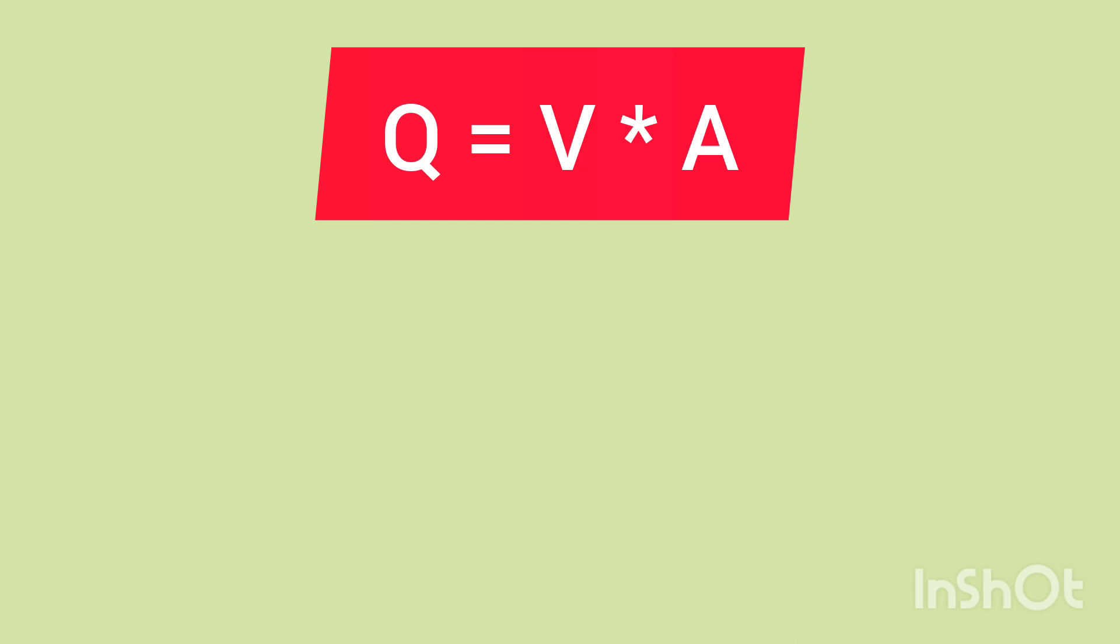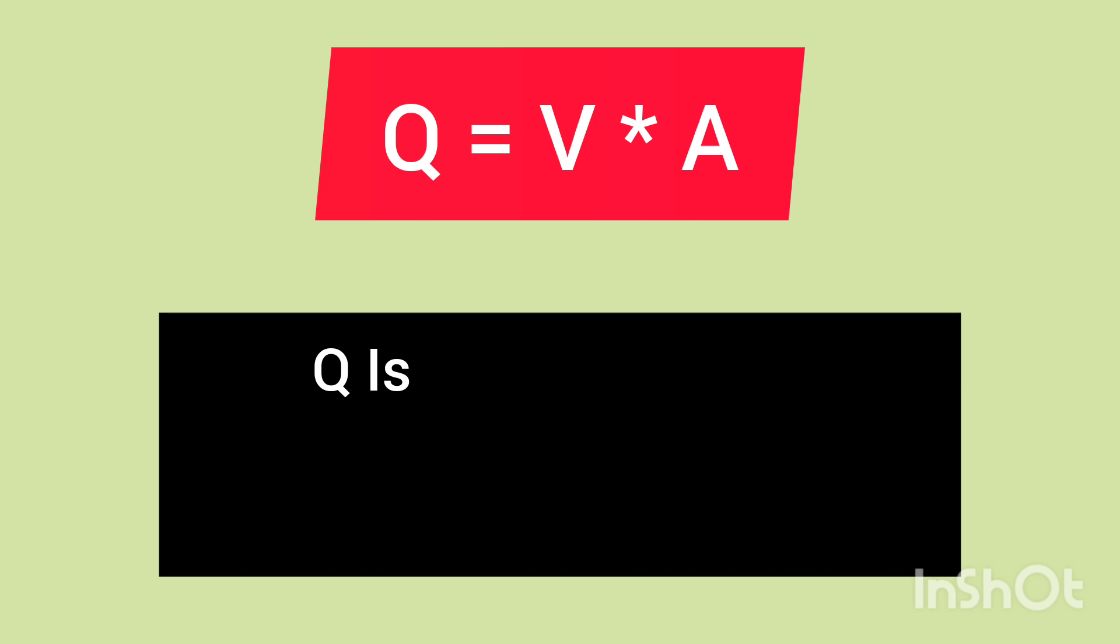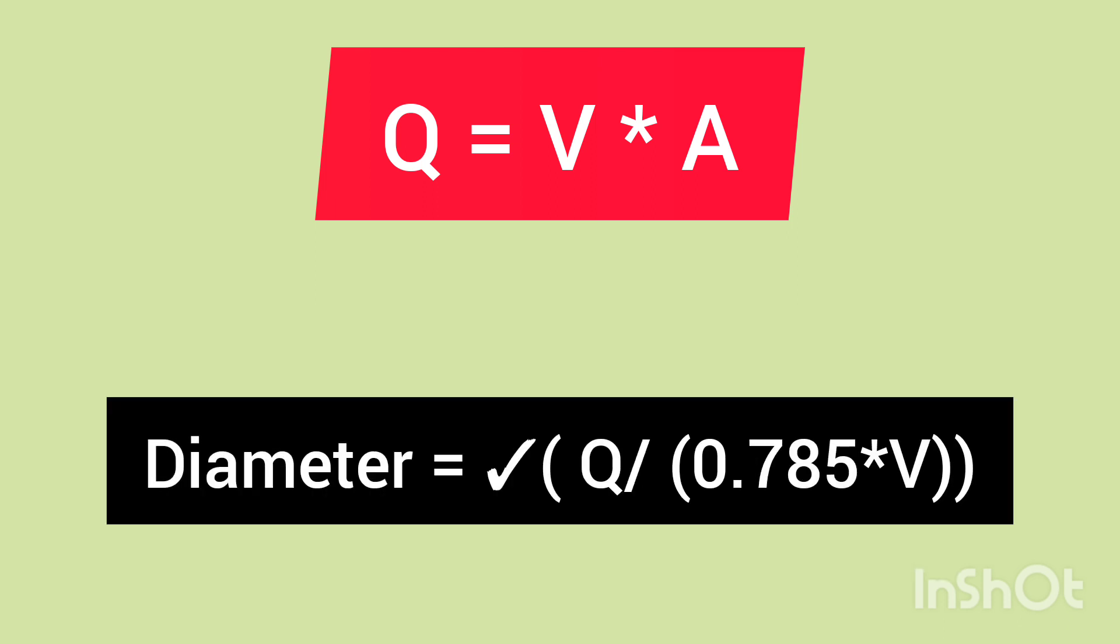So let's start with one example, but before starting with the example we can rearrange this formula as diameter equals square root of volumetric flow rate in meter cube per second divided by 0.785 times velocity. 0.785 is the value of π by 4.